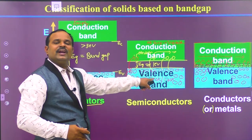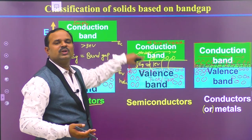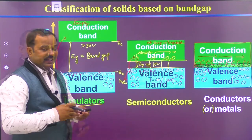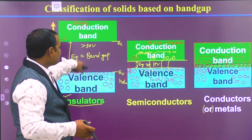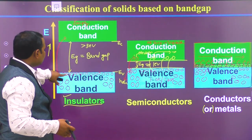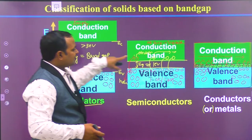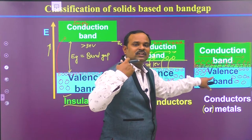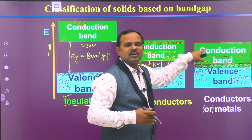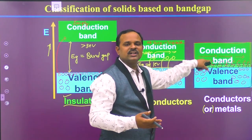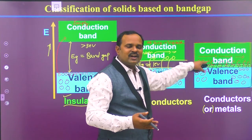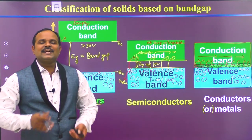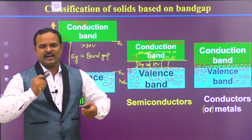In semiconductors, we need to give external energy so that electrons go to the conduction band. In insulators, we cannot give enough energy because the band gap is very large, so electrons cannot be pumped to the conduction band. In metals, there are already a large number of electrons available in the conduction band because of the overlapping of the valence band and conduction band. This is the classification of materials based on the band gap.